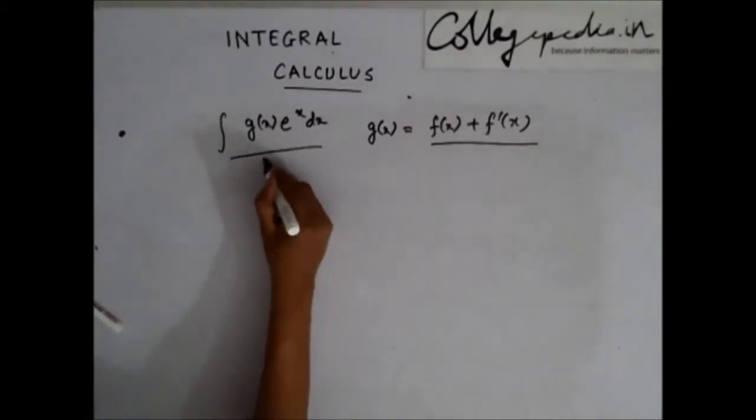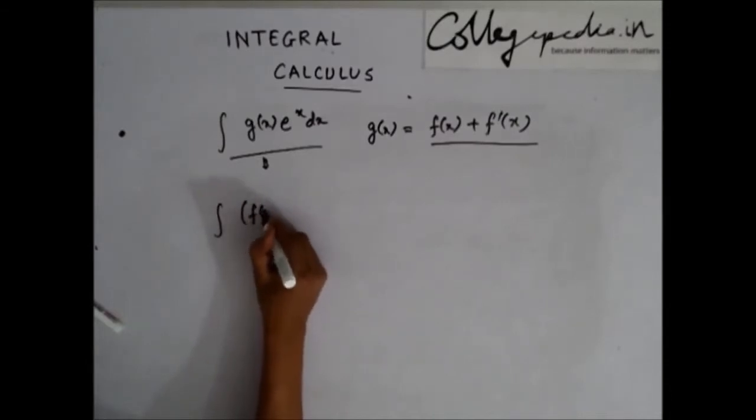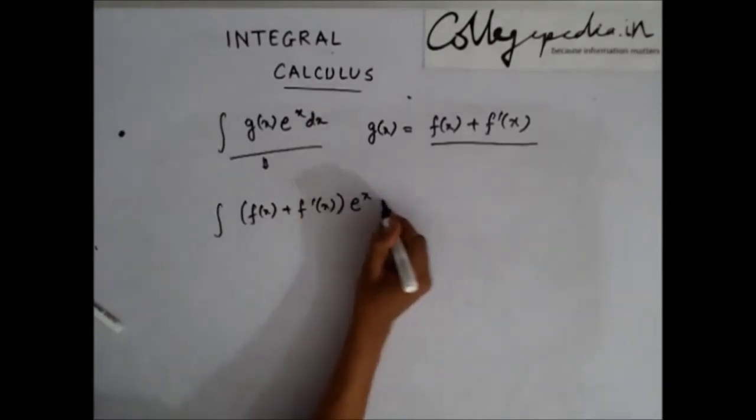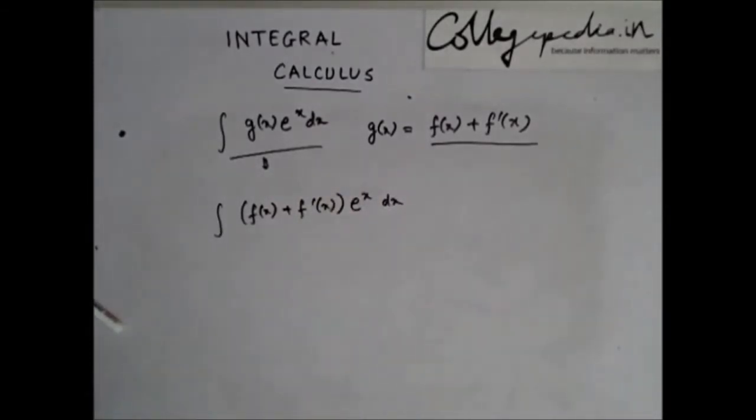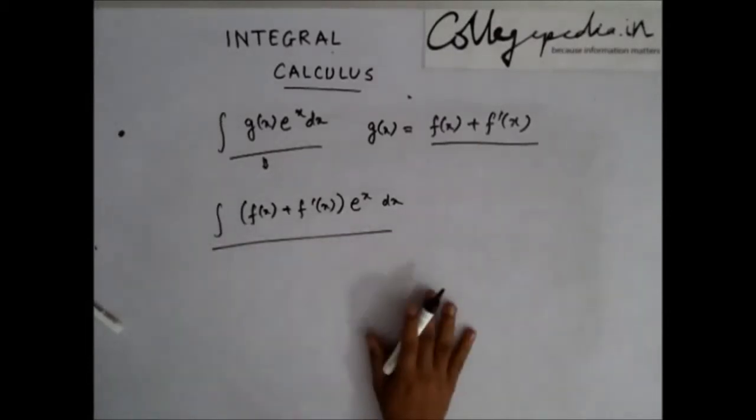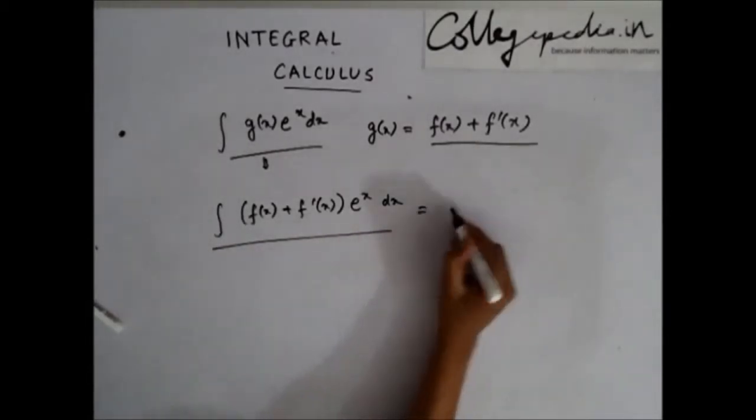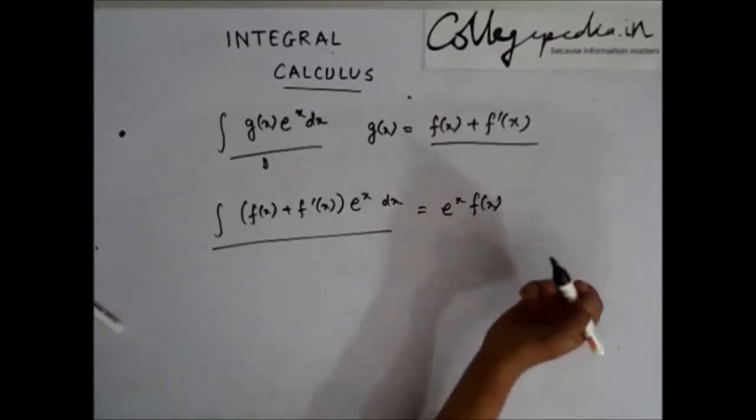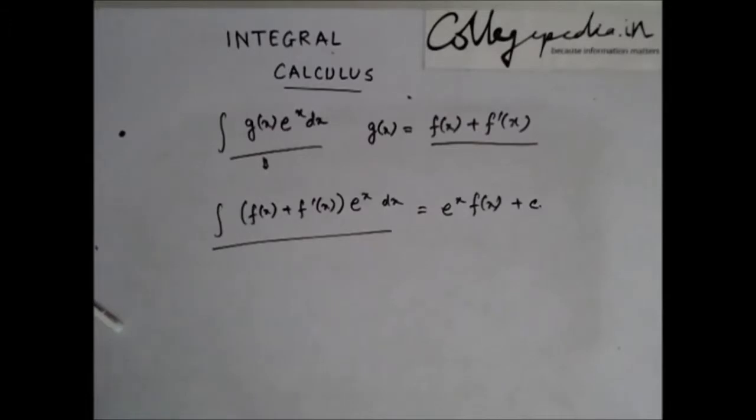So, by this integration, I can represent it as (f(x) + f'(x))e^x dx. Now, the conclusion is, if I have an integration of this form, the solution to this integration comes out to be e^x f(x) + c. So this is my conclusion.